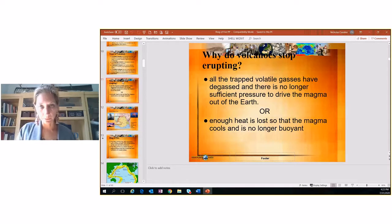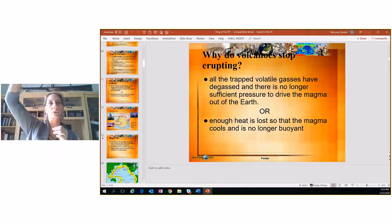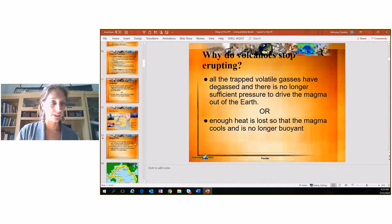Why do they stop erupting? Trapped gases are no longer enough pressure to drive that magma out. So it's just not enough gas and not enough pressure to push it out. So they'll just stay kind of dormant. Heat is lost so that magma cools and it's no longer buoyant. So magma is really, really hot and liquidy, it's going to become more buoyant and go up to the top. But if it's not hot, it starts to cool off, it's going to stay down below. No need to erupt. So heat has a lot to do with it.